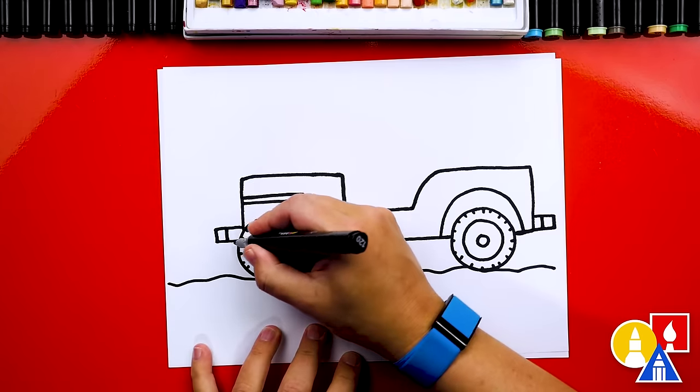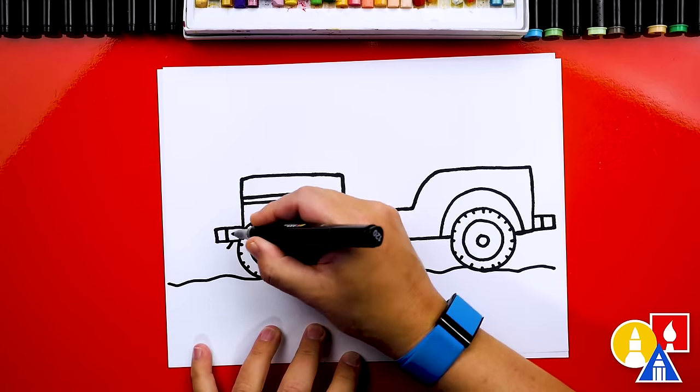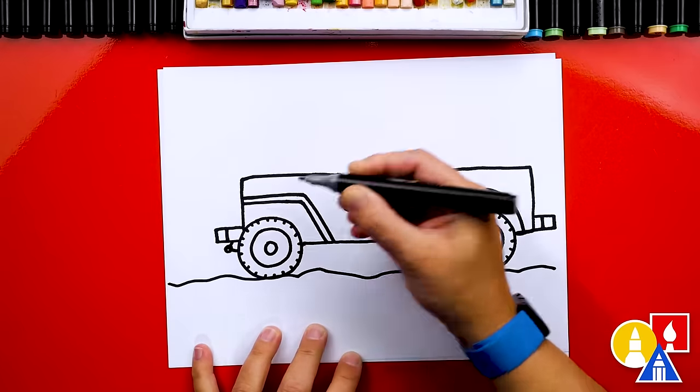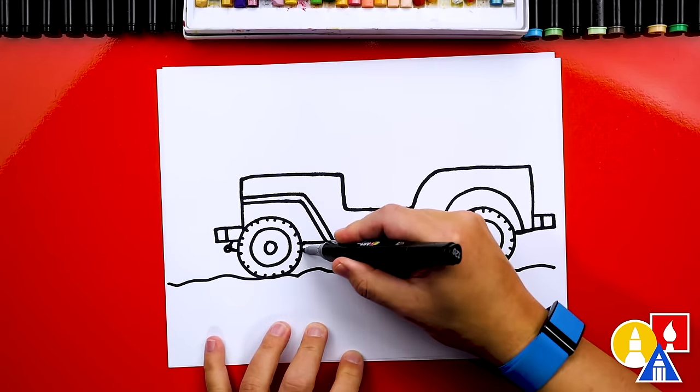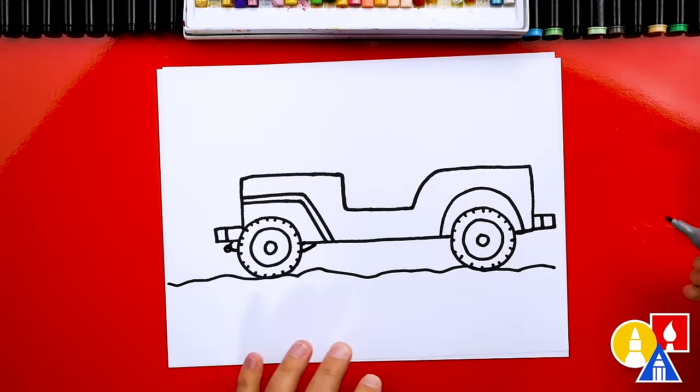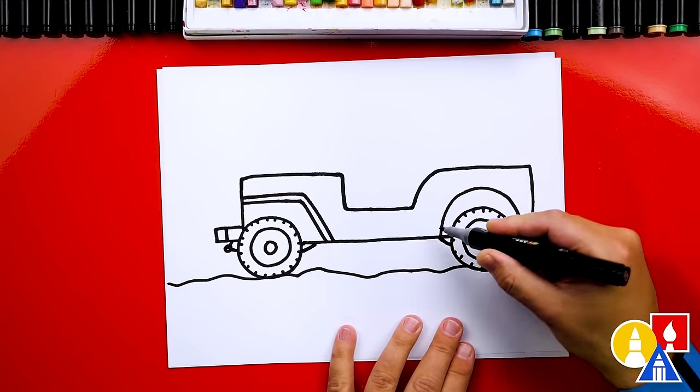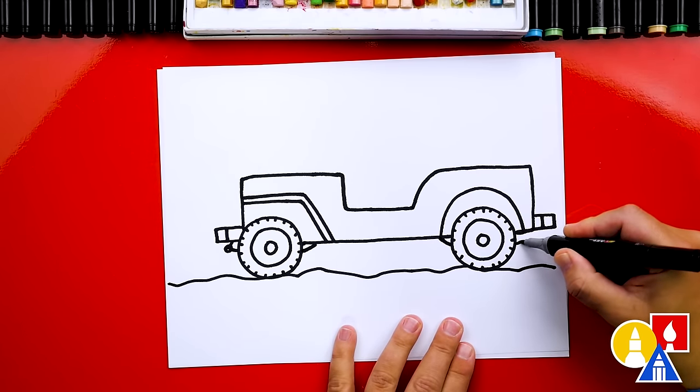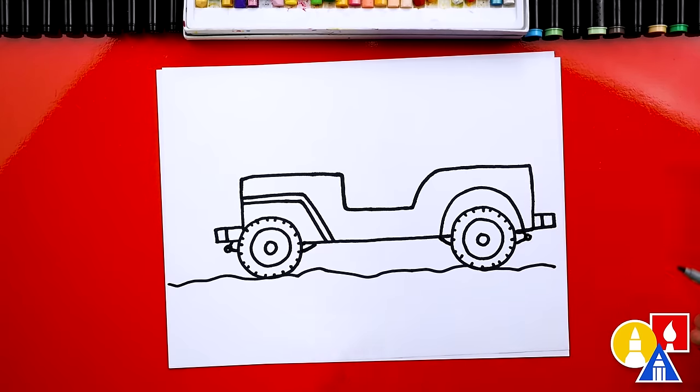We could also add suspension. Let's draw a diagonal line that comes out here to a circle. And then we're gonna connect it back in. And then let's draw a diagonal line here too. Let's do the same line back here for the back wheel. We're gonna come up like this. We'll add a circle and then a diagonal line back.